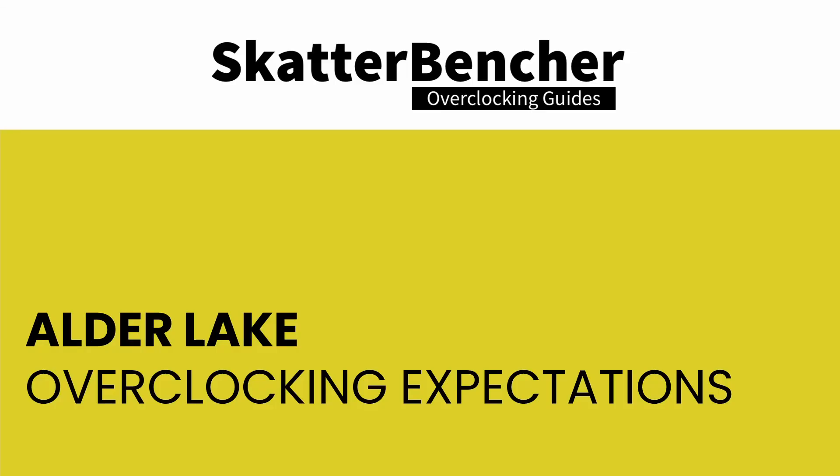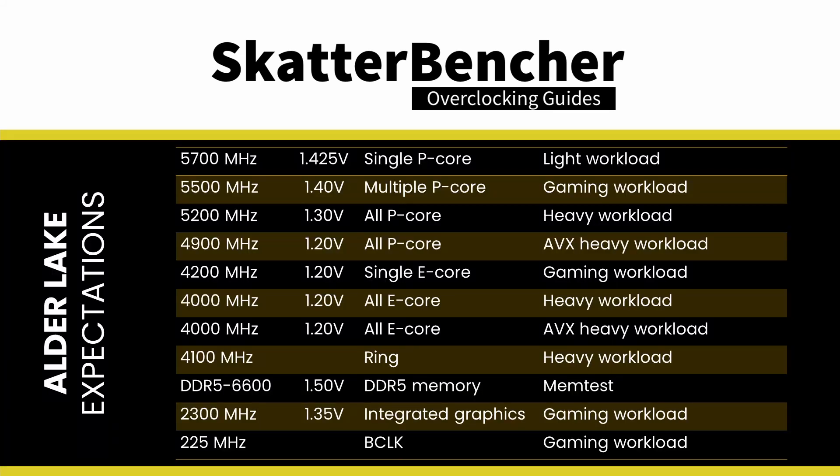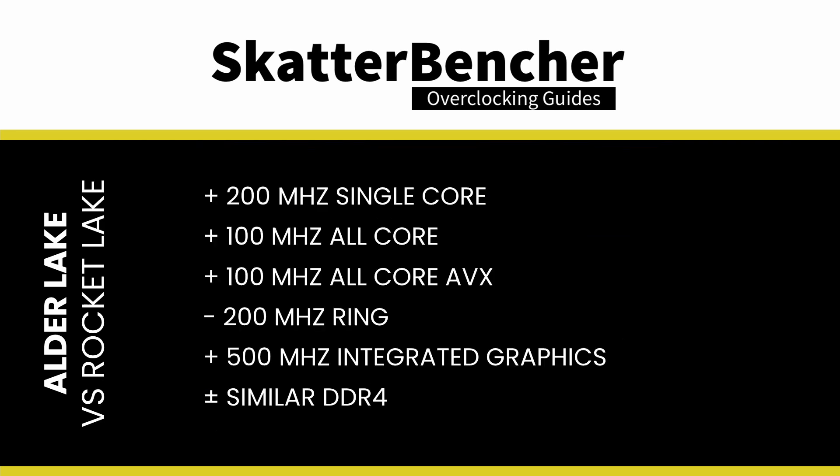In terms of overclocking expectations for ambient cooling, I expect the following maximum overclocking results when using high-end custom loop water cooling. This is almost the overclock I managed during one of my early recorded test sessions. Compared to Rocket Lake, we have 200 MHz more for single core frequency, 100 MHz more for all-core frequency, 100 MHz more for all-core AVX frequency, 200 MHz less for ring frequency, 500 MHz more for integrated graphics, and similar DDR4 memory frequency capabilities.